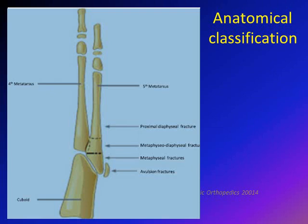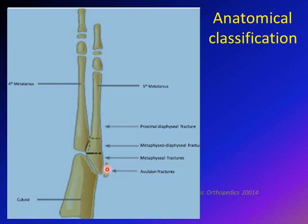Let's discuss the anatomic classification of the base of the fifth metatarsal. The physis is parallel to the long axis of the fifth metatarsal. Fractures can occur at the physis, the metaphyseal part, the metaphysio-diaphyseal part, or the proximal diaphysis. If the fracture occurs at the physis, you will not see a fracture line — it occurs through the growth plate — but the apophysis will be widely displaced from the metaphyseal part of the fifth metatarsal.